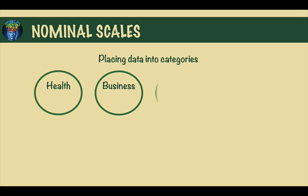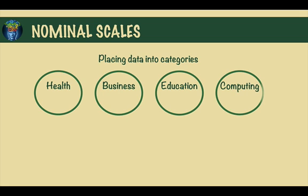So first we have the nominal scale. As the name implies, it is simply about placing data into categories without any order or structure. The category can be expressed in a numeric code or a non-numeric label. So for example, if a university wants to classify its students into groups based on their major,